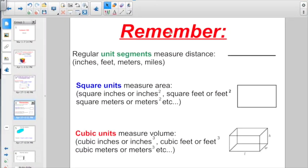And so you also have to remember now three different types of measurement. Regular unit segments, whether it's just plain inches or feet or meters or miles, they all measure distance. You're talking just a straight line. Square units measure area, whether you say square inches or inches squared, or square feet or feet squared, or square meters or meters squared. You're talking about the area of an object. And this new one, cubic units measure volume, or cubic feet or feet cubed, cubic meters or meters cubed. You're talking about how much total space is in this 3D object.